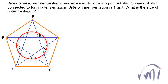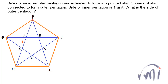Here we have an inner pentagon which is a regular pentagon and each side of this pentagon is one unit. Each side is equal to one unit and the sides of the pentagon are extended to both sides to form this five-pointed star. And then if I join the corners of the five-pointed star, I'll again get a pentagon, and this pentagon will also be a regular pentagon.